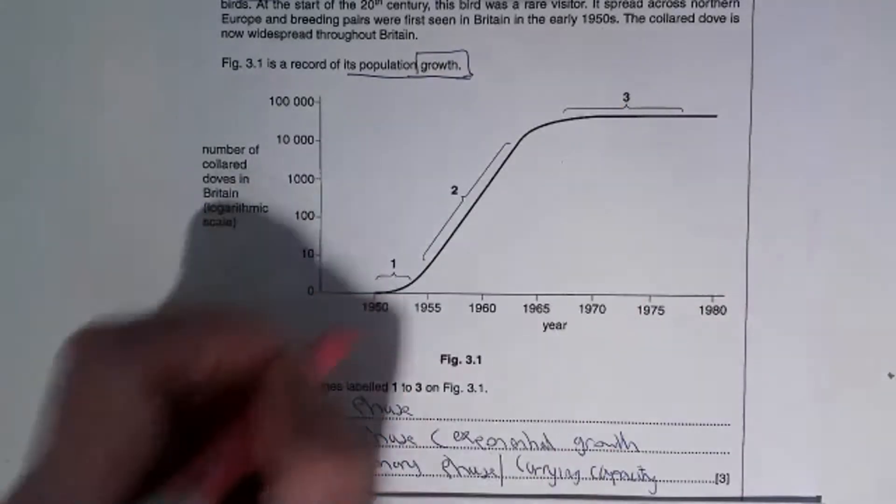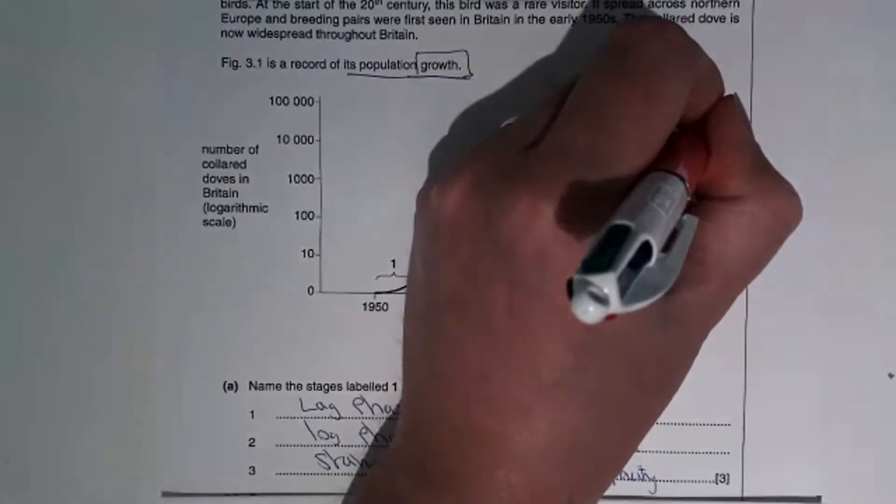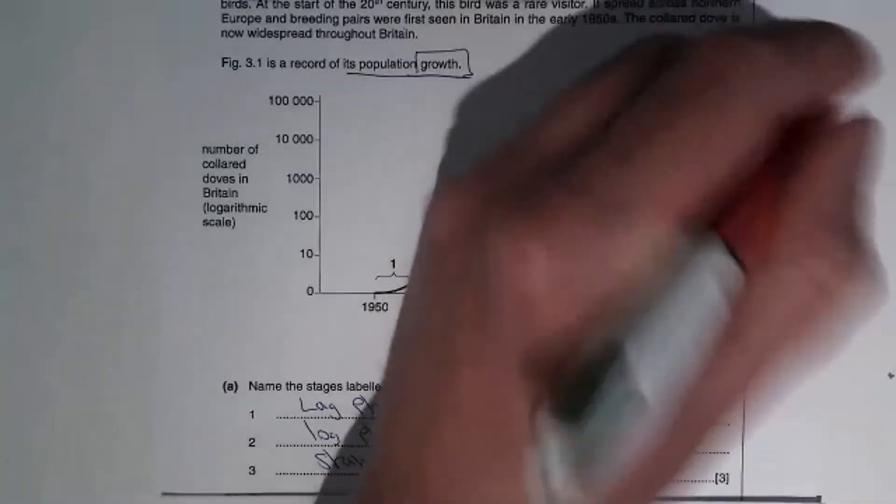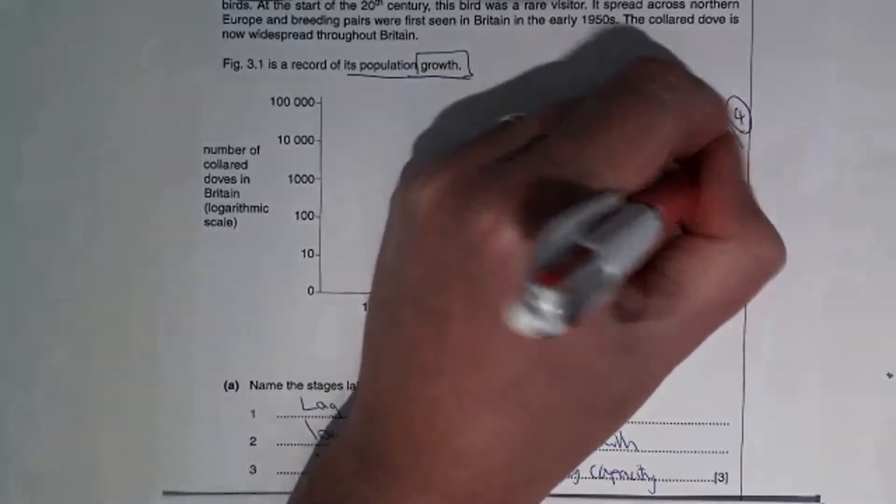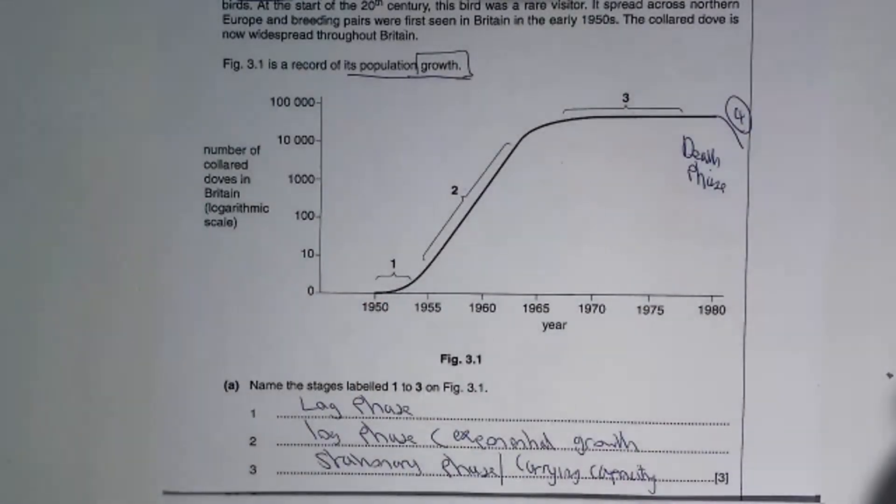You may see in some growth curves, this graph start to go down and a stage four identified. And that would be the death phase. And that's when death rate is larger than birth rate.